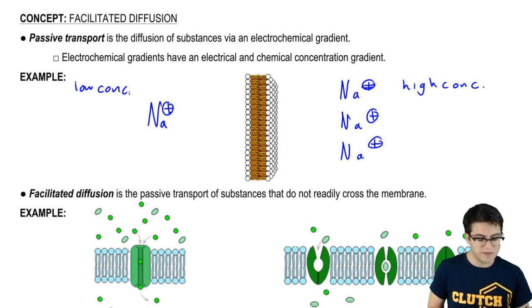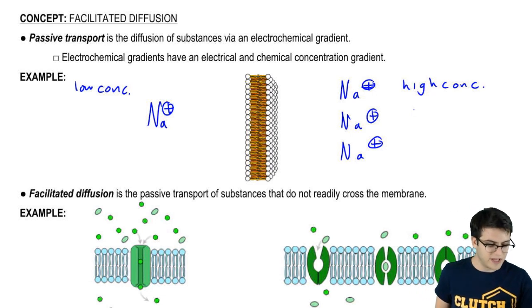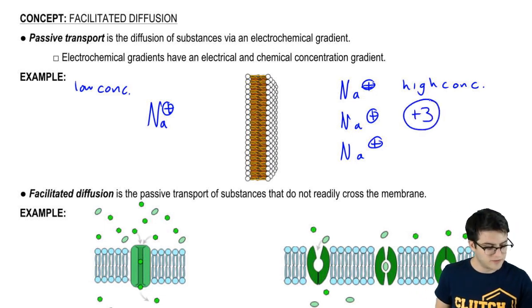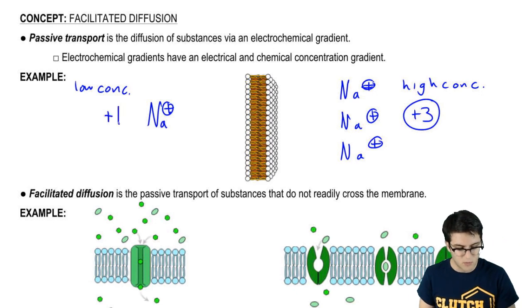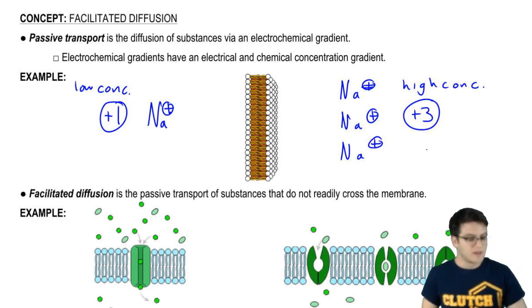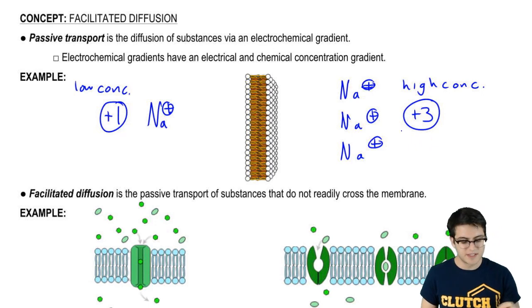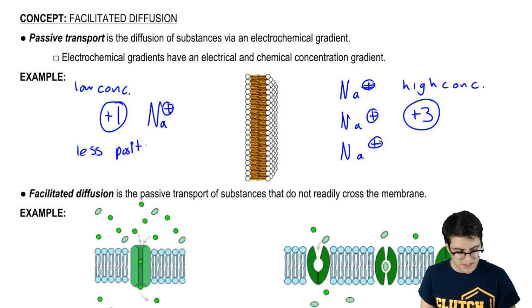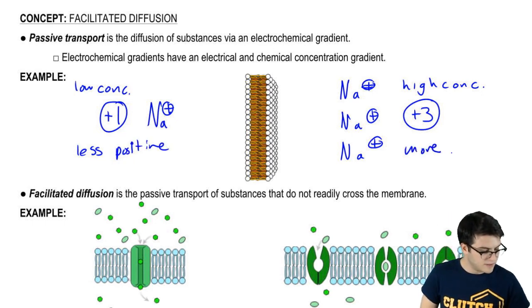There's also an electrical gradient, right? Because here we have a plus three charge, and here we have a plus one charge. That means that this side with the plus three charge is more positive than the side with the plus one charge. So we have an electrical gradient where this is the less positive side, and here it's more positive.